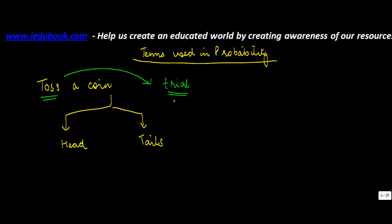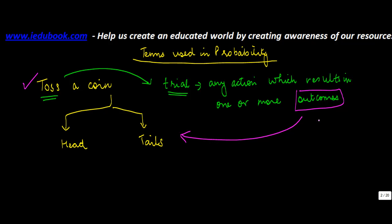And trial basically is any action which results in one or more outcomes. So in this particular case, the trial is tossing a coin because it has more than one outcome, which is it could either be tails or it could be heads.